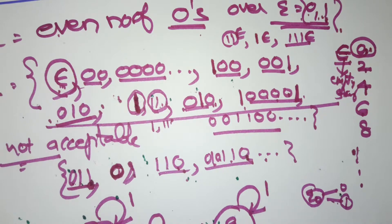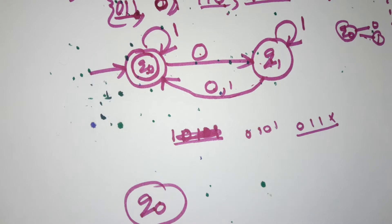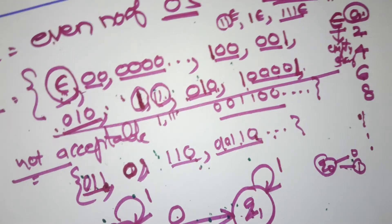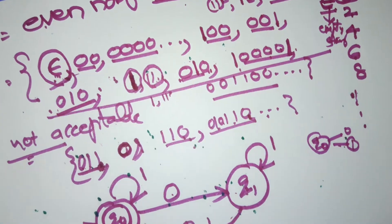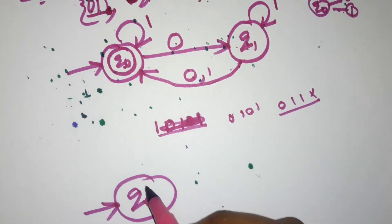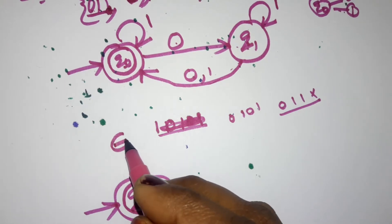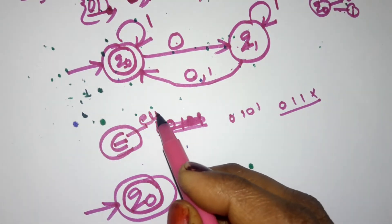Now we are going to design the DFA. First I am taking the initial state q0. Since zero number of zeros — which is epsilon — is acceptable, the initial state is also the final state. Whenever the input string contains epsilon, the initial state becomes the final state.